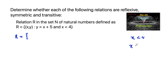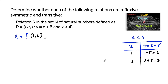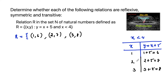Since x is less than 4, we consider values of x from 1 to 3, and y = x + 5. If x = 1, then y = 1 + 5 = 6, so (1, 6) is an ordered pair. If x = 2, then y = 2 + 5 = 7, so (2, 7) is an ordered pair. If x = 3, then y = 3 + 5 = 8, so (3, 8) is an ordered pair. These are the 3 ordered pairs: (1,6), (2,7), and (3,8). Now let us check reflexive.